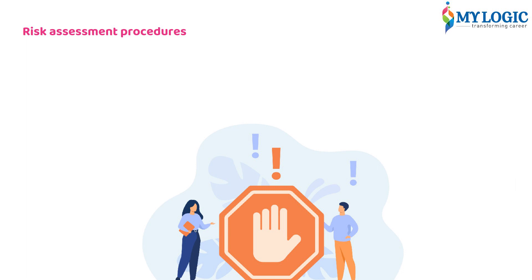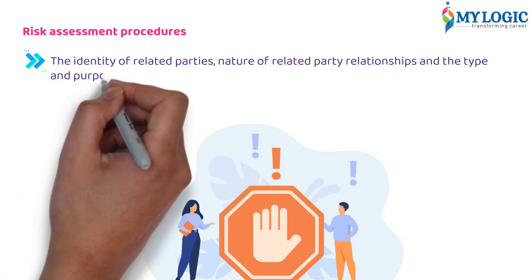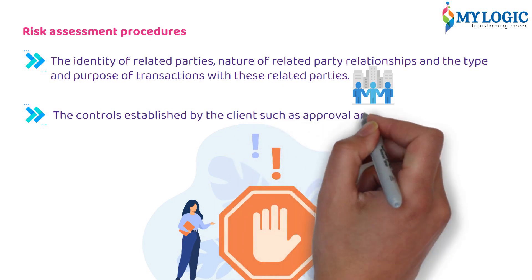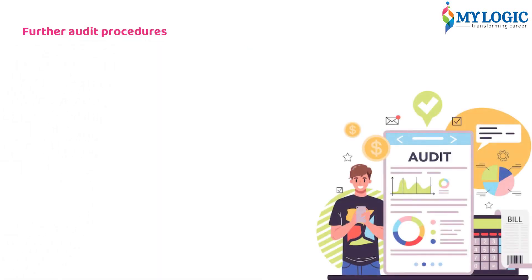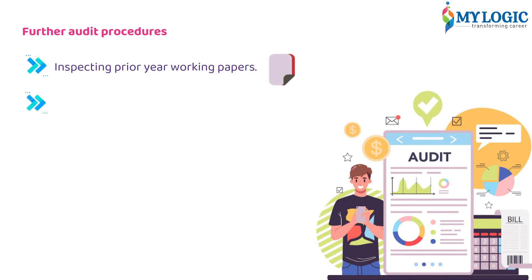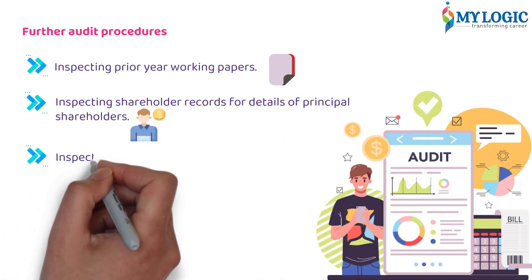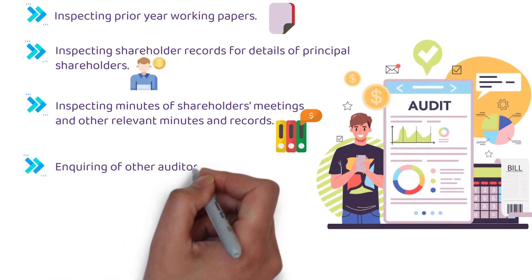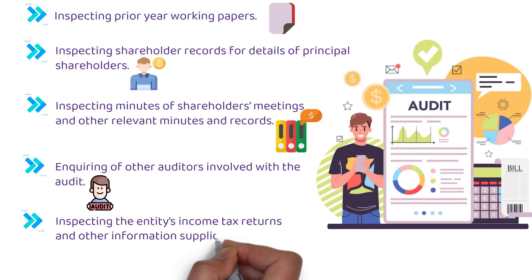Risk Assessment Procedures: the auditor should obtain an understanding of the identity of related parties, the nature of related party relationships, and the type and purpose of transactions with these related parties, as well as the controls established by the client such as approval and authorization of transactions. Further audit procedures include: inspecting prior year working papers; inspecting shareholder records for details of principal shareholders; inspecting minutes of shareholders' meetings and other relevant minutes and records; inquiring of other auditors involved with the audit; and inspecting the entity's income tax returns and other information supplied to regulatory authorities.